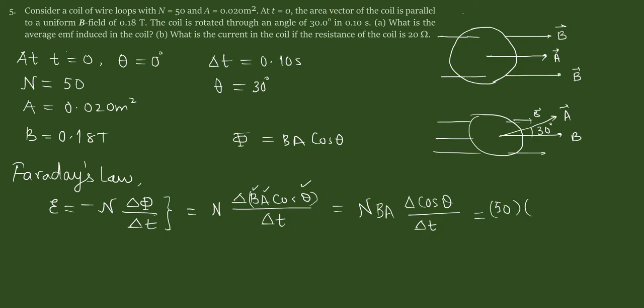Magnetic field is 0.18 tesla. Area is given 0.02 meters squared. Over time is 0.10 seconds.